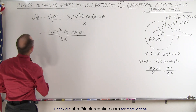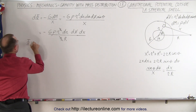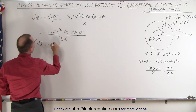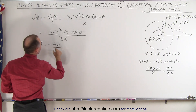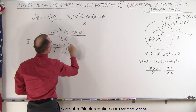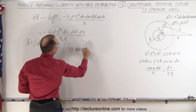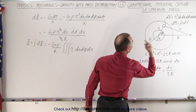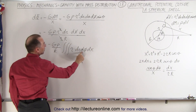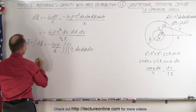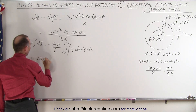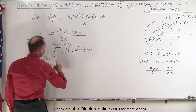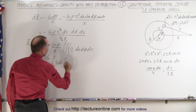The gravitational potential becomes the integral of all the dφ's, giving us −Gρ/R times the triple integral in r, φ, and x. Integrating dφ from 0 to 2π gives 2π, so this becomes −2πρG/R times the double integral of r dr and dx.